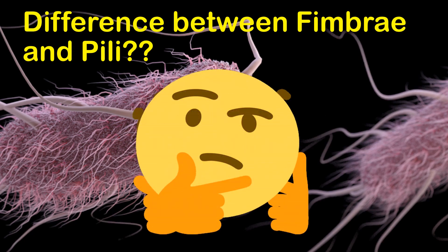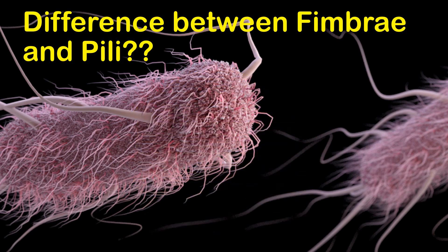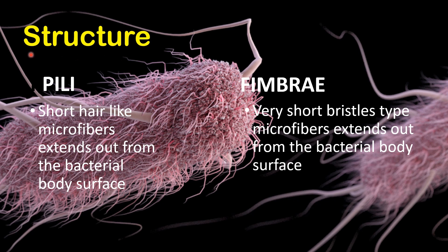Now you must be thinking that both pili and fimbriae are extensions on the body surface of bacteria, then how are they different from each other? So here is your answer. As you can see, this is the body surface of a bacterial cell and these are extensions coming out from the body surface — some are very short and some are bigger. Those short hair-like structures are called pili, and those which are bristle-like are fimbriae. So pili are short hair-like microfibers that extend out from the body of a bacterial cell, whereas fimbriae are very short bristle-type microfibers that extend out from the bacterial body surface.